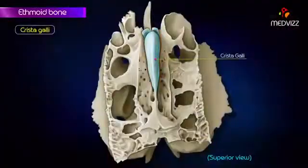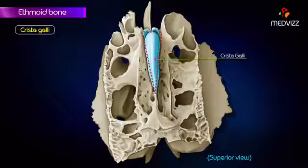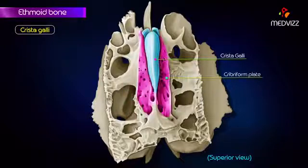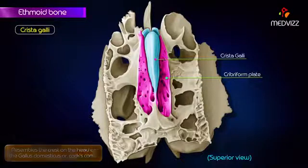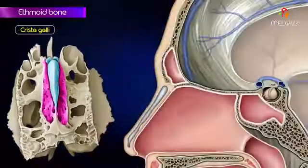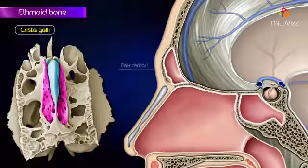The crista galli is a triangular median crest on the upper surface of the cribriform plate. It resembles the crest on the head of Gallus domesticus, or cock's comb, and gives attachment to the anterior end of the falx cerebri.